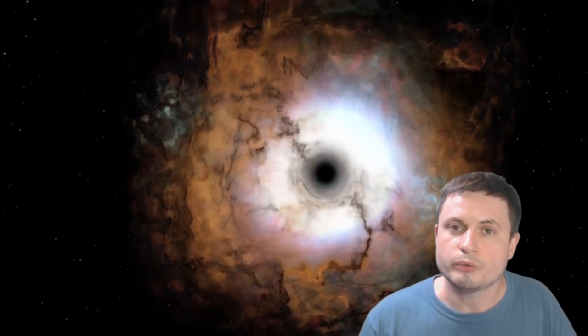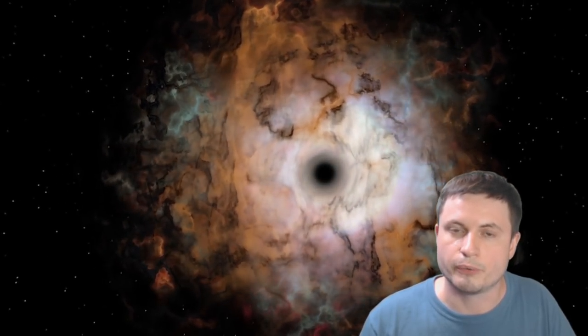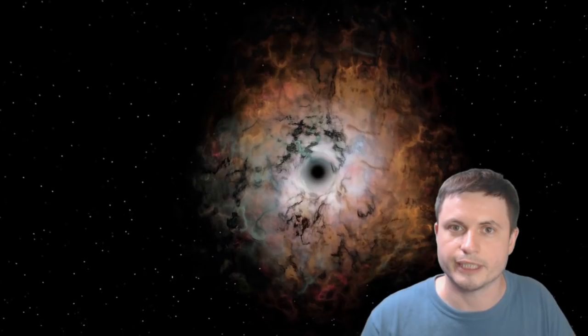When a supernova occurs, when a very large and very massive star goes supernova, most of its mass normally ends up being completely redistributed across the galaxy. Only a very small fraction of the star releases the energy itself. The amount of energy released here is normally equivalent to the total energy our sun is going to produce through its lifetime. So it's a lot.